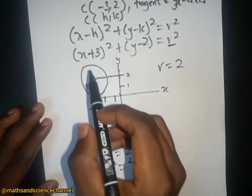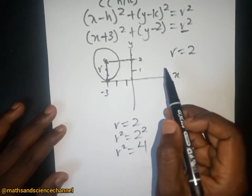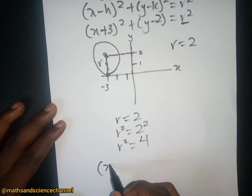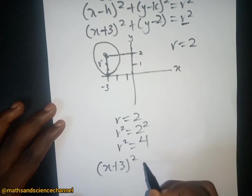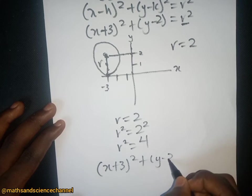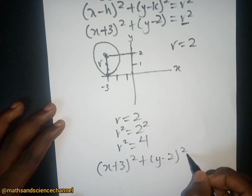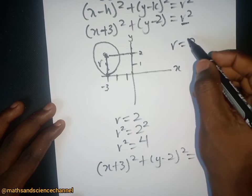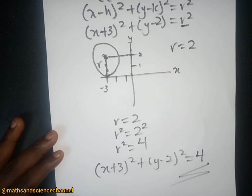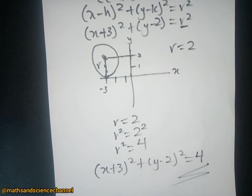Therefore, we can conclude that the equation of the circle is (x plus 3) squared plus (y minus 2) squared equals r squared, and r squared equals four. That is the equation of the circle tangent to the x-axis with center negative three and two.